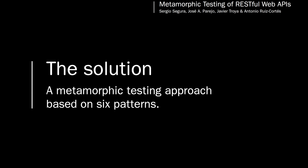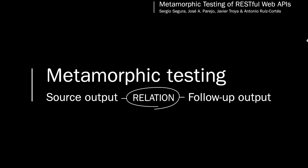To solve this oracle problem and to make testing of RESTful Web APIs easier, the authors have come up with a metamorphic testing approach based on six patterns. Instead of comparing expected and actual output, you check whether the output from a source test case and a follow-up test case fulfill a specified relation.